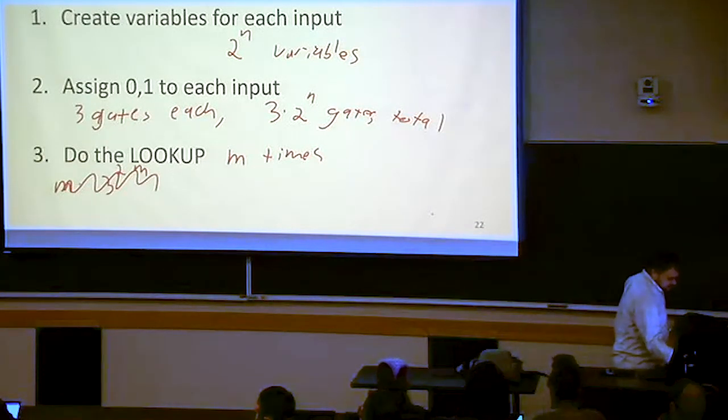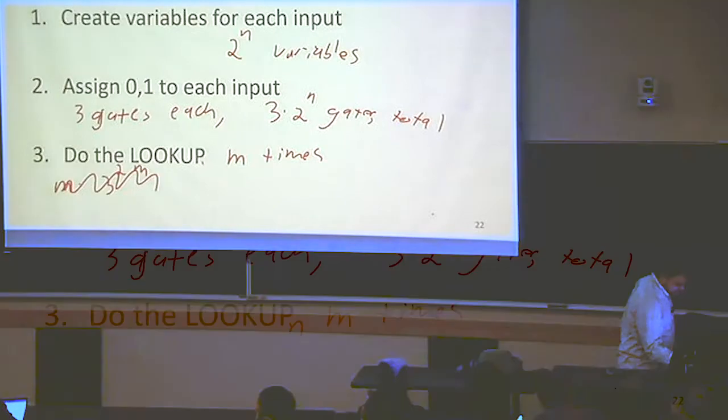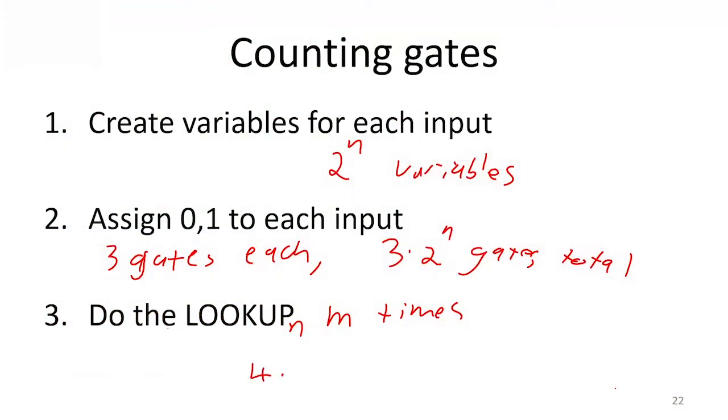So the lookup we're doing, we're doing the lookup, which is a lookup sub n. So we're going to do 4 times 2 to the n gates for that lookup. And then we're going to have to do that m times.